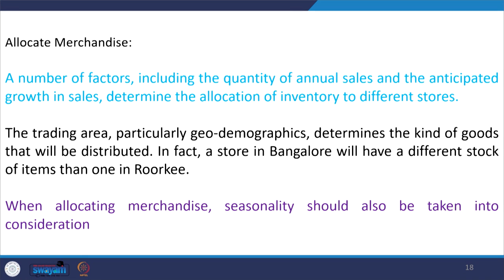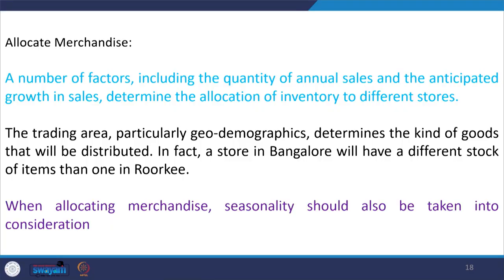Finally, you reach the stage of allocating merchandise to stores. At this phase, factors like the quantity of annual sales for a particular retail store are considered to decide how much merchandise should be allocated. Geodemographic factors are also considered — for example, what you see in a grocery store in Bangalore would be very different from one in Rishikesh. The element of seasonality should also be taken into account when allocating merchandise.